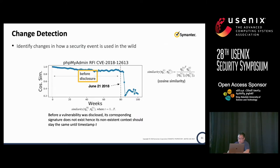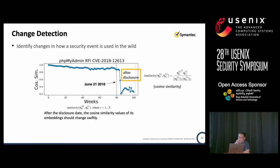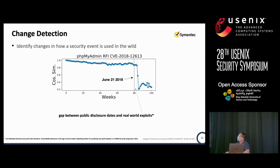For change detection, we talk about how we can identify changes per security event. This one is a PHP MyAdmin RFI CVE. You will see that before the CVE was disclosed, the embedding is pretty stable — meaning our method is working because the context doesn't change. After that, you can see the similarity actually changed, with a swift diversion from the non-existent context, and that's where you see where the drift happens. There is also a gap between where the context starts drifting and the disclosure date, which has already been documented in an NDSS 2015 paper.